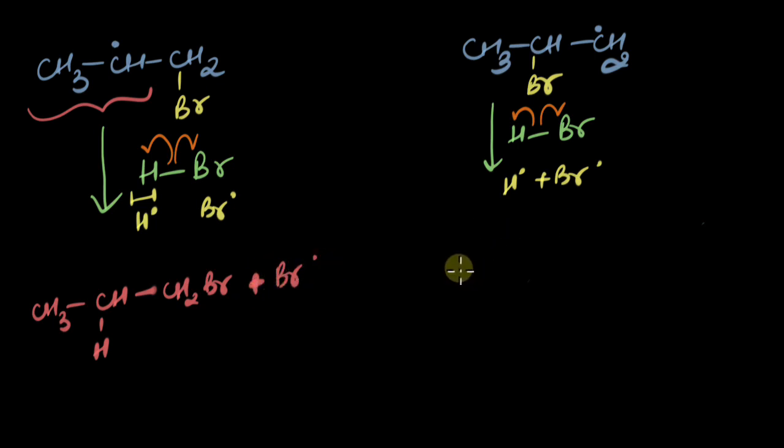And what happens with the right free radical? CH3-CHBr-CH2 and it forms a bond with this H plus Br atom.